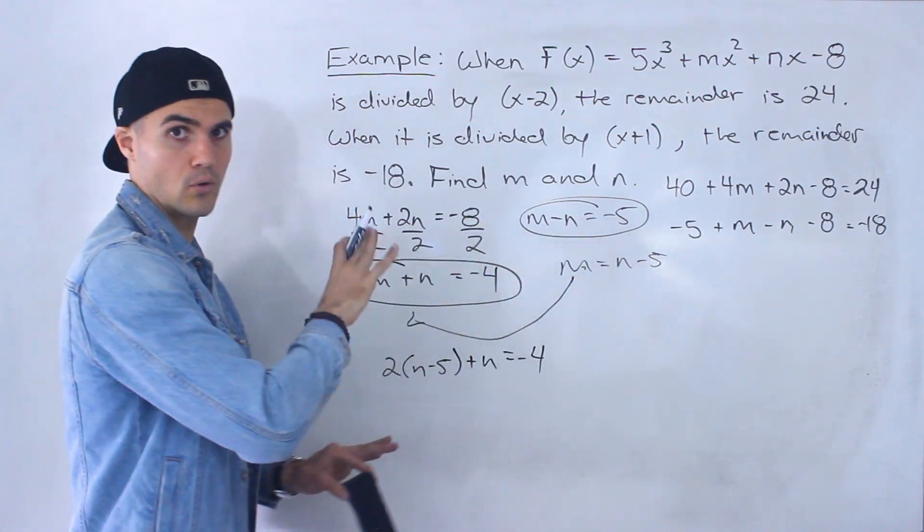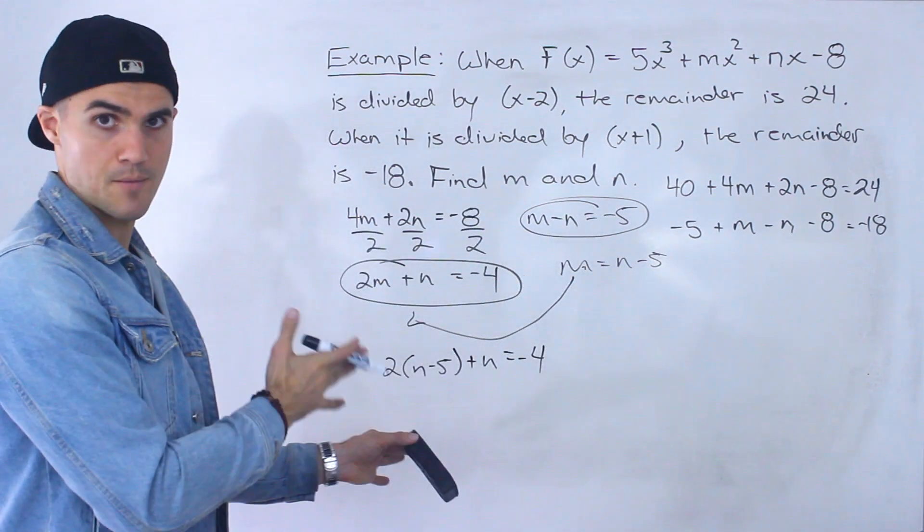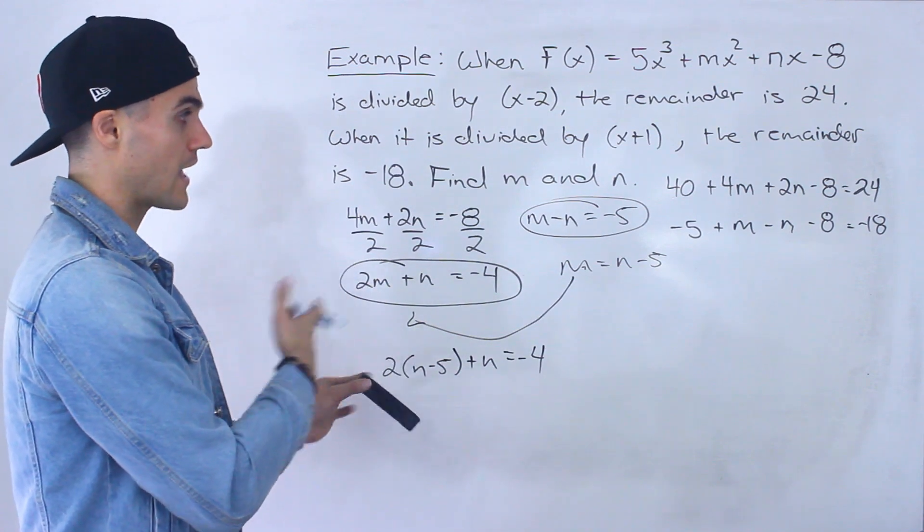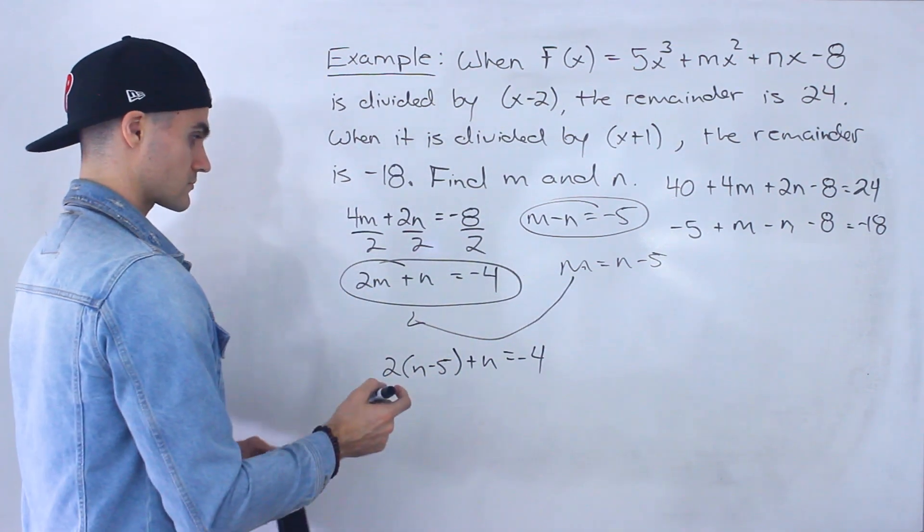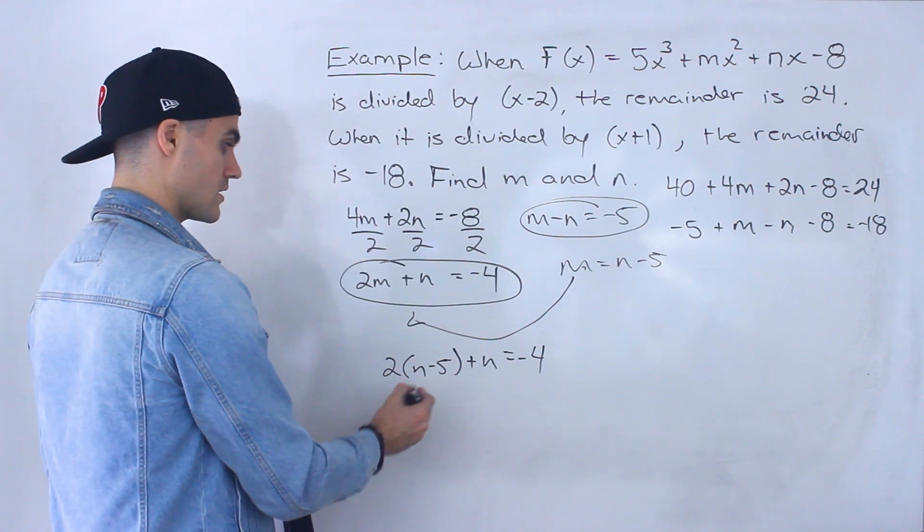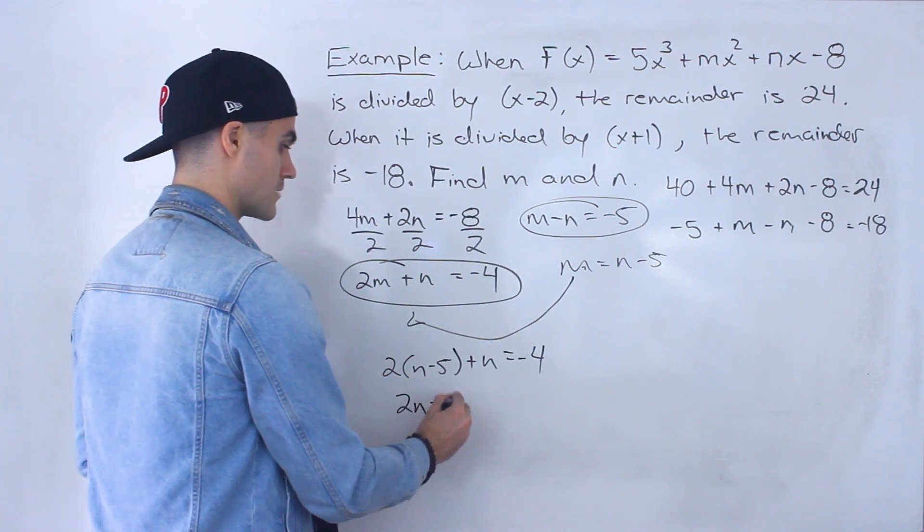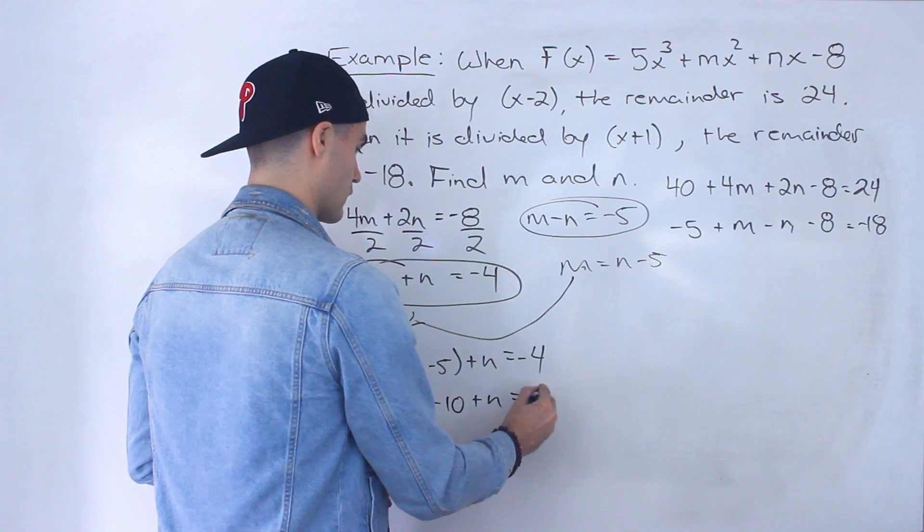By the way, you might go in a whole different order here. As long as you get the same n, the same m and n values at the end, that's really what matters. So here we have 2n - 10 + n equals negative 4.